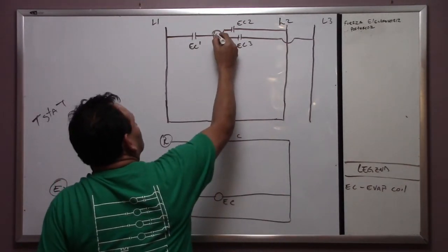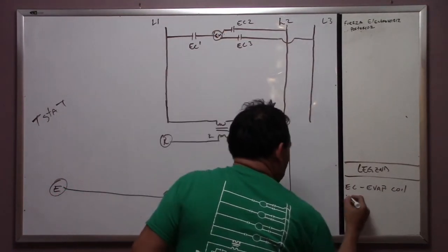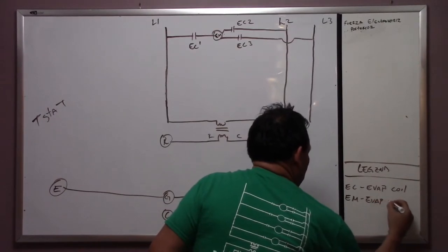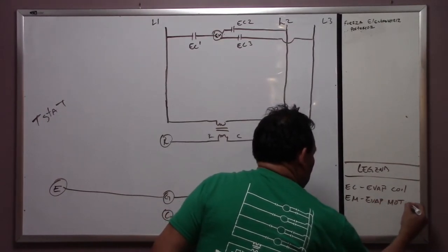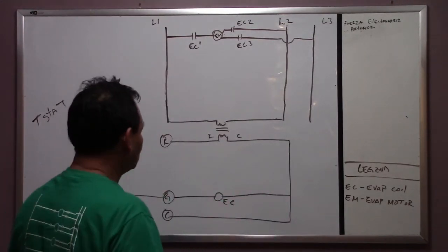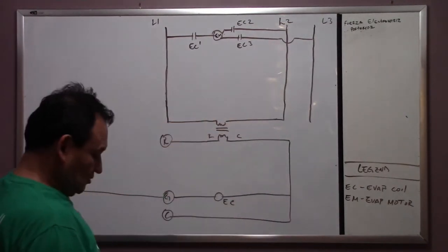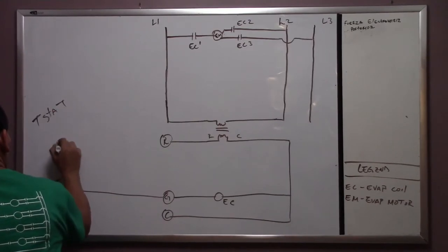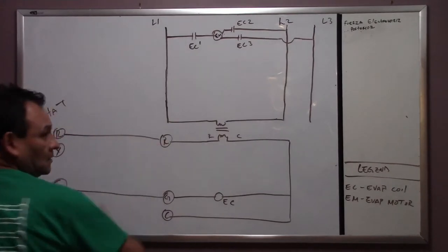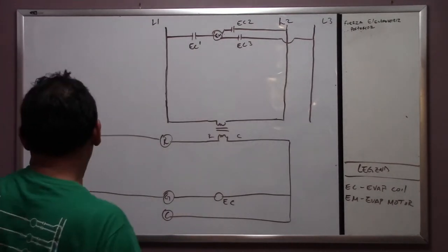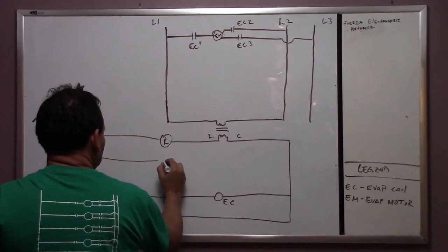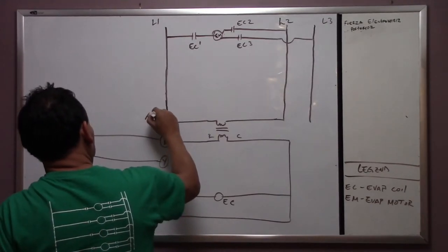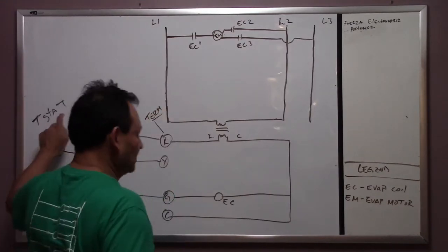This is the M and this is the L, meaning evap motor. Now we are going to talk about Y1 plus R over here, and then we are going to have Y1 here. This is your terminal strip and this is your stat.